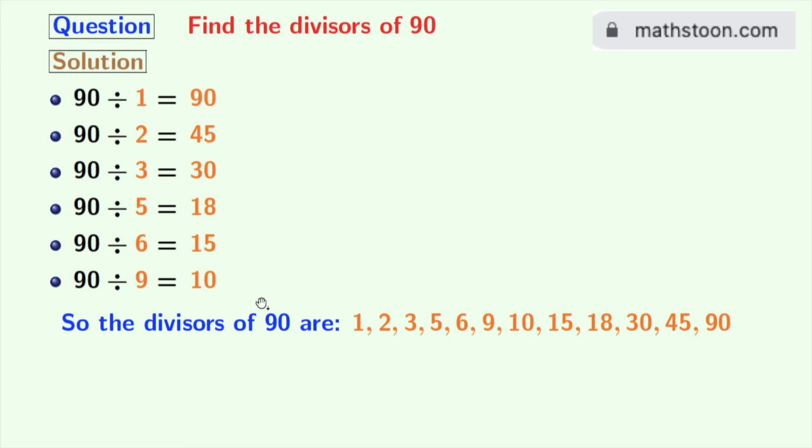So the total number of divisors of 90 is 12. Now give a close look at these divisors. You can say that 2, 3 and 5 among these numbers are prime numbers. Because these 3 numbers do not have any divisor other than 1 and this particular number itself. So we can say that the prime divisors of 90 are 2, 3 and 5.